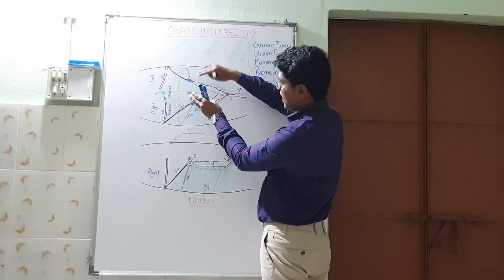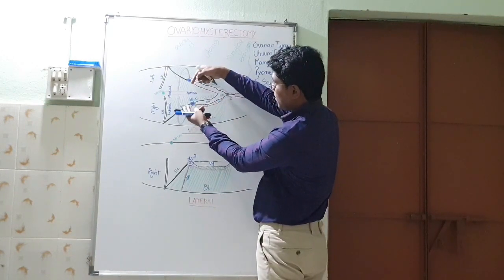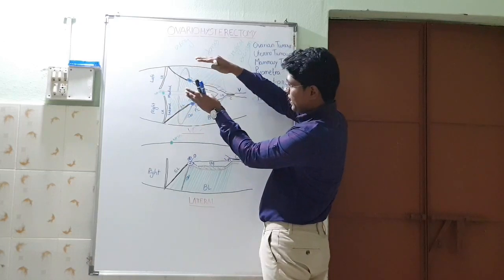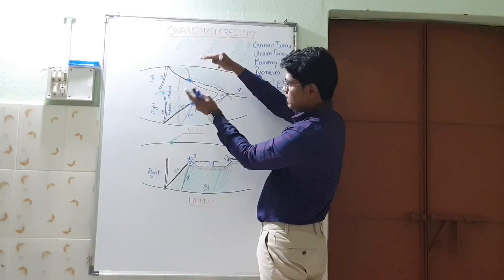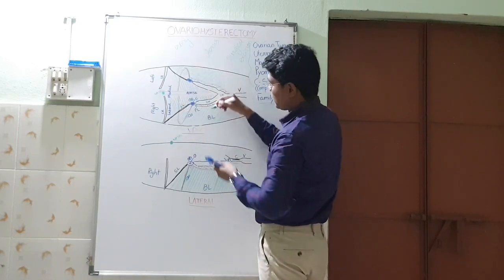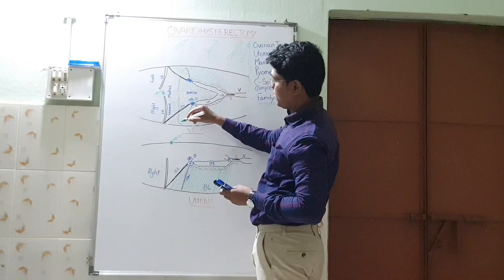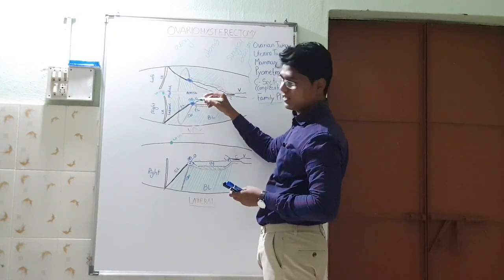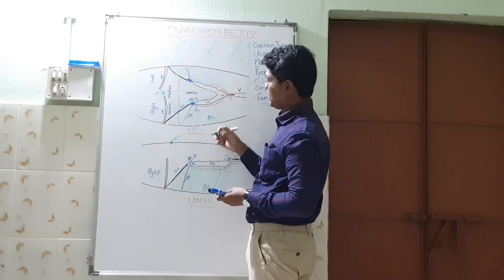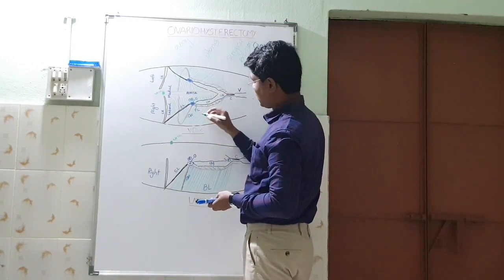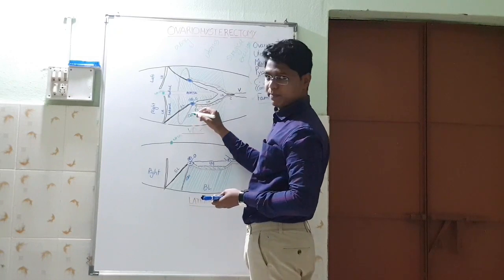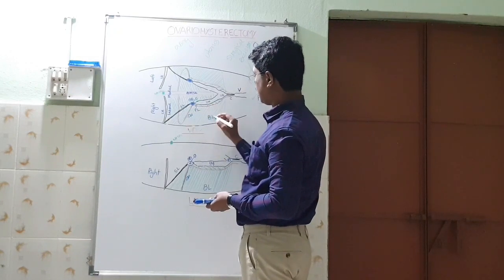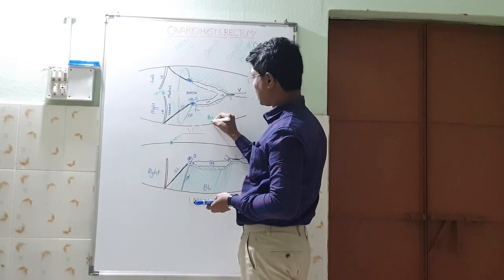This is the ovarian pedicle, which contains the ovarian artery — a direct branch of the aorta. Because the animal is sleeping ventral-dorsal, the ovarian artery arises from the aorta and curves to the ovary. This is also known as the ovarian pedicle. The green colour is the broad ligament.